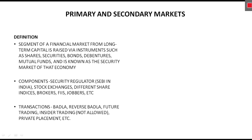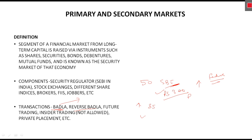Transactions in the security market include 'badla' — a condition in which a shareholder postpones the selling time of shares. For example, if a person holds 50 shares of SBI at a current price of ₹300 and expects prices to rise in future, they will delay selling. This is called badla. The reverse badla is when a holder is getting a high price today, say ₹350, but expects prices to fall in future, so they sell now.